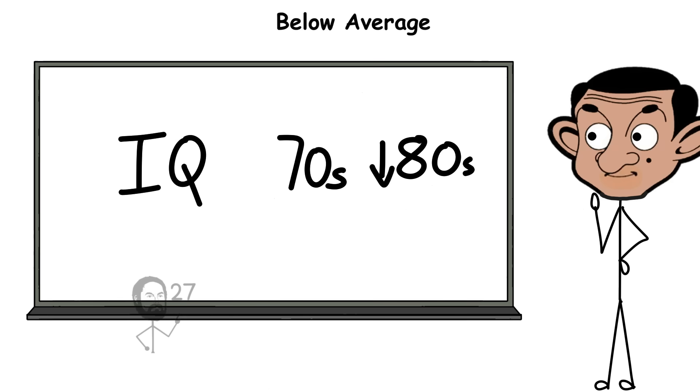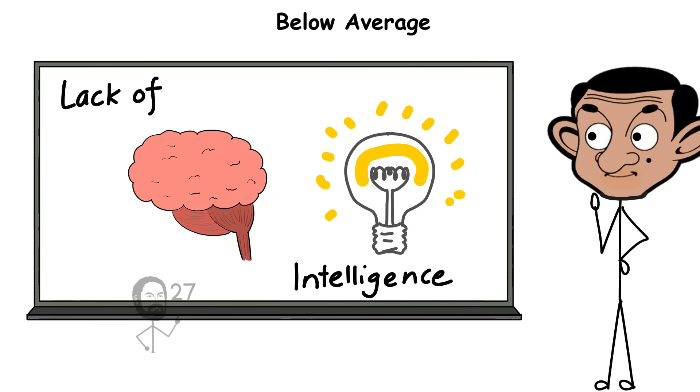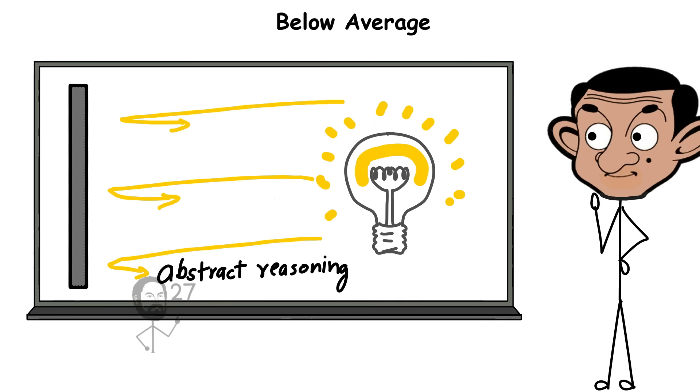An IQ in the 70s or low 80s does not imply a lack of intelligence. It reflects differences in abstract reasoning, problem-solving, and verbal comprehension compared to the general population.